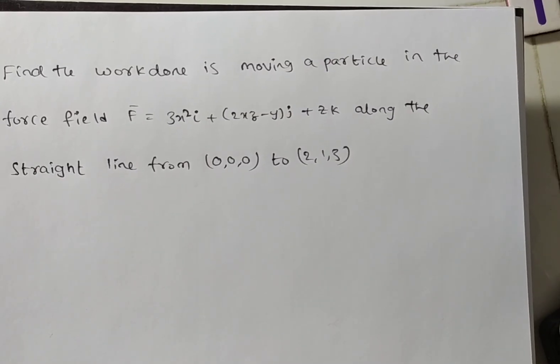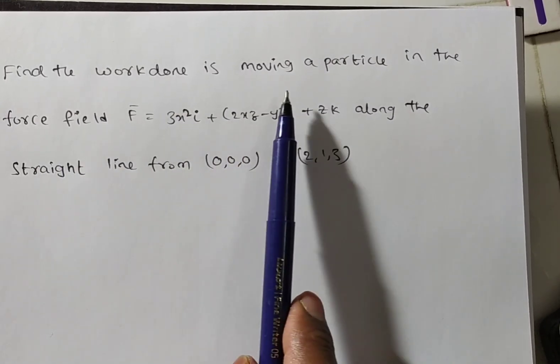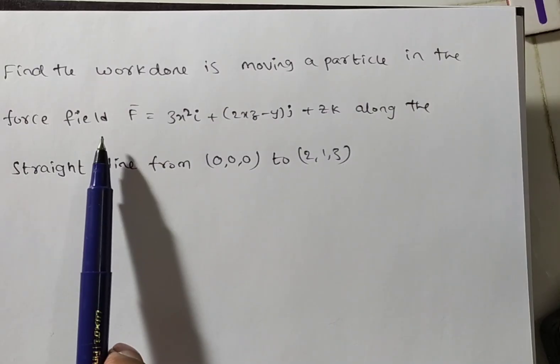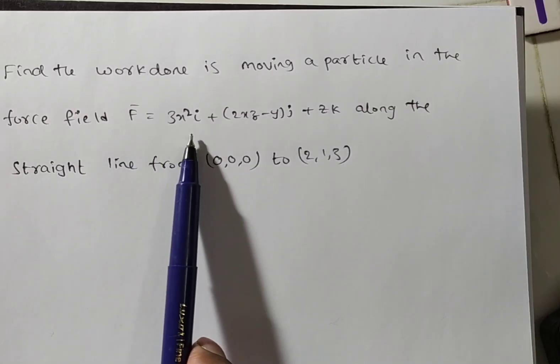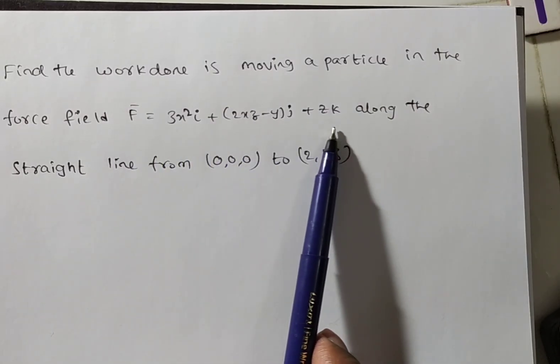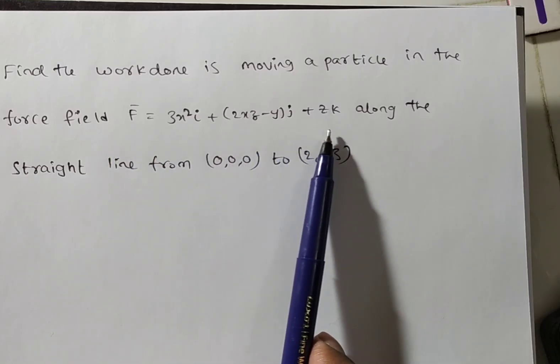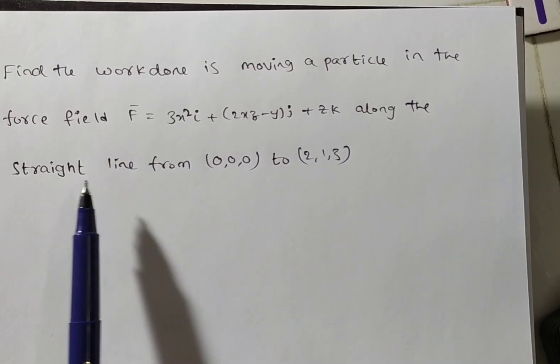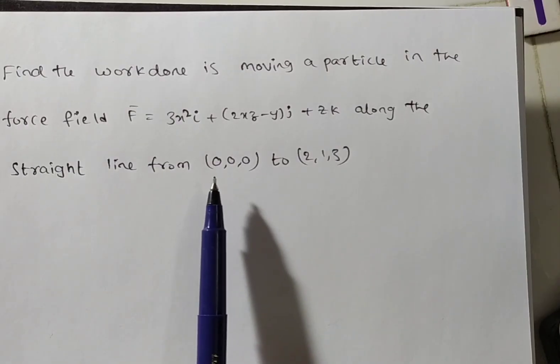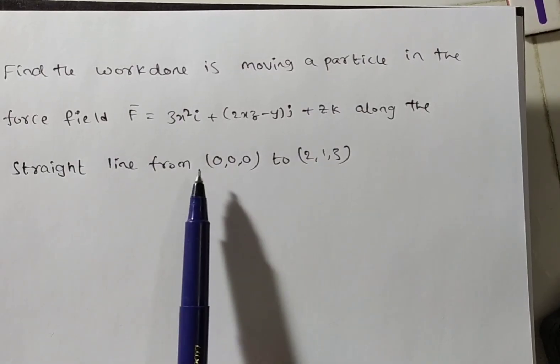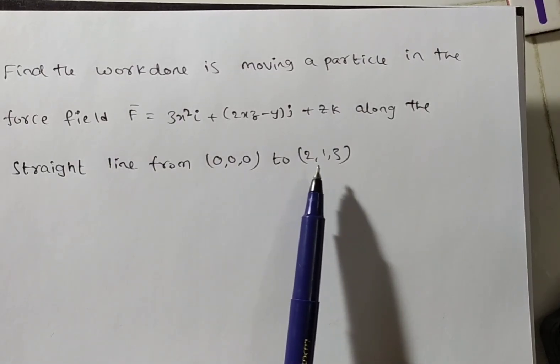Given problem is: find the work done is moving a particle in the force field F bar equals f1i plus f2j plus f3k along the straight line from a point (0,0,0) to (2,1,3).